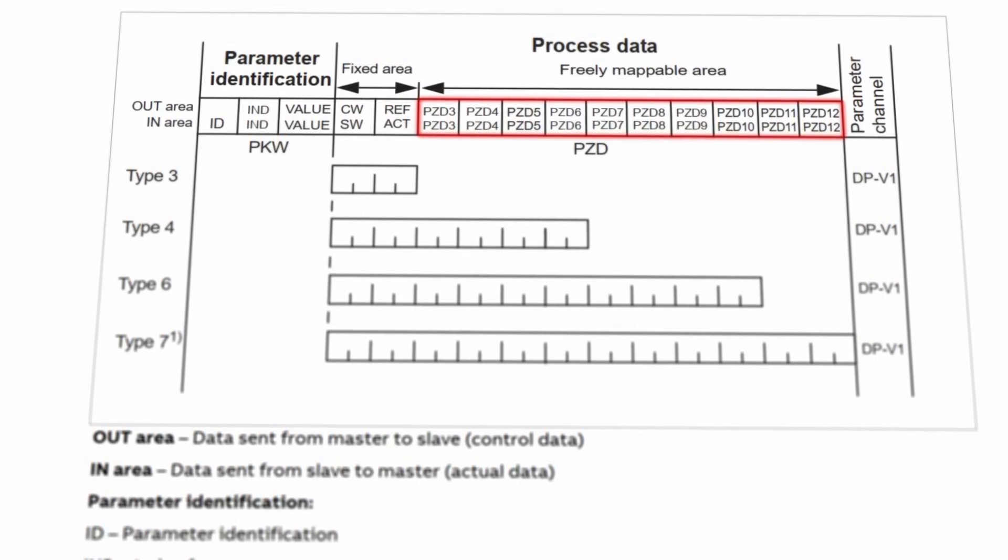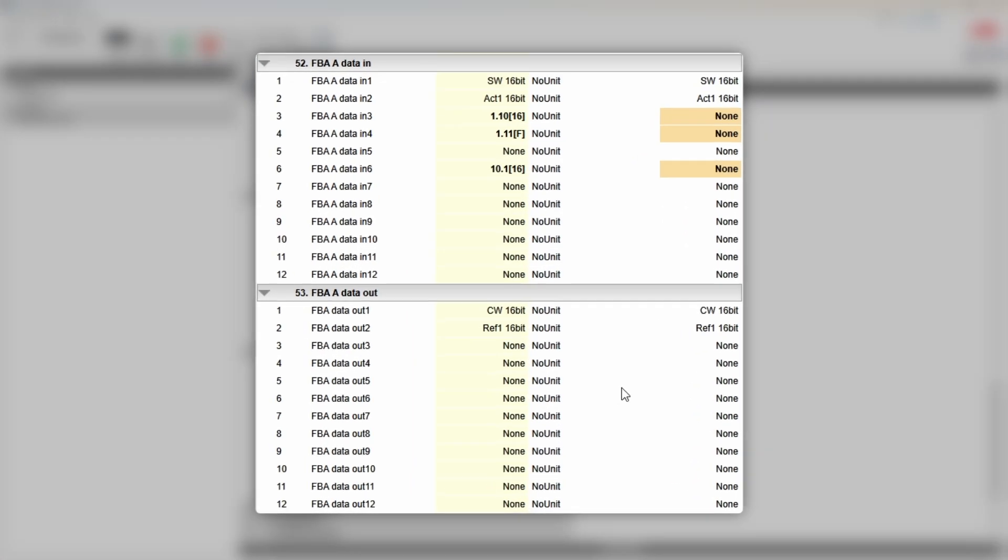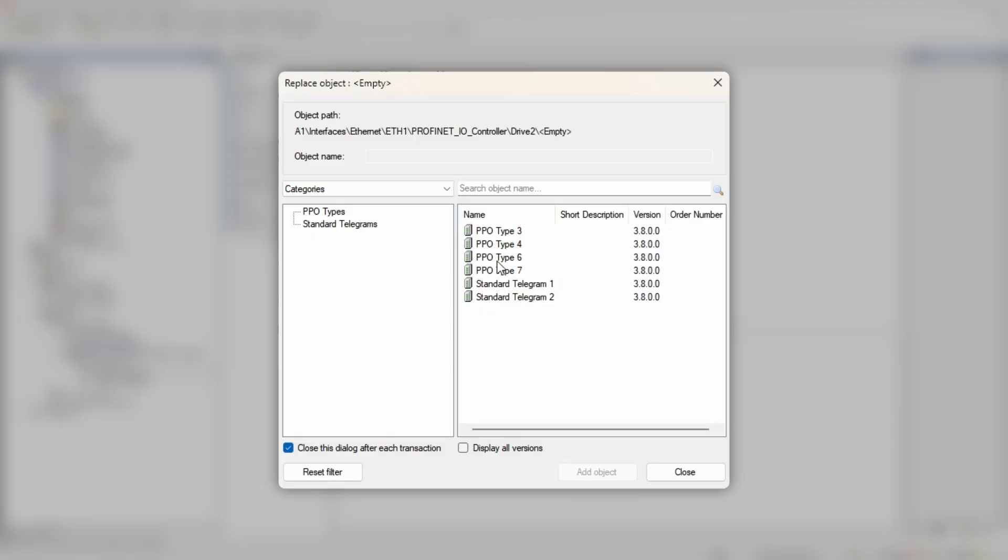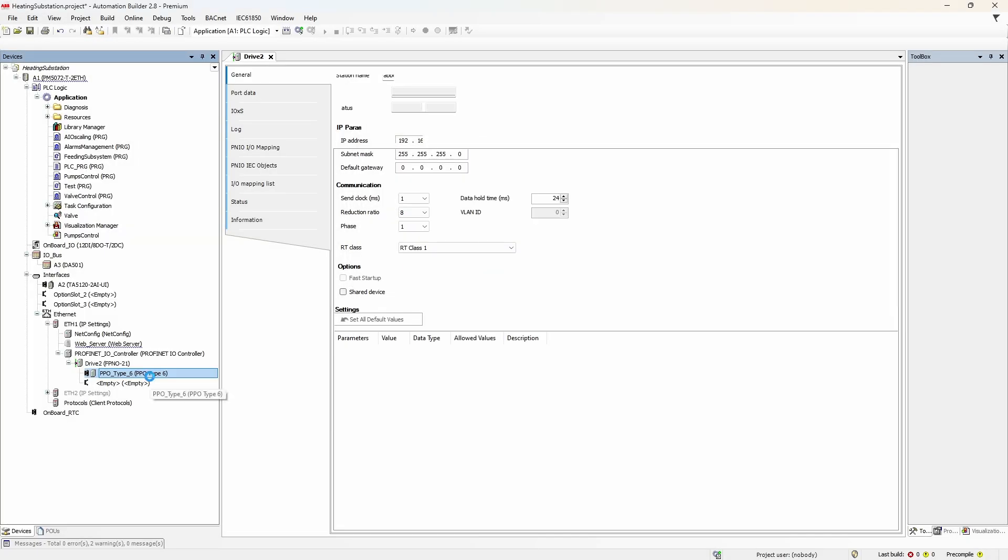Additionally, depending on the PPO type, there could be up to 10 extra PZD—short for process cyclische daten in German. Oh my god, that is so embarrassing to watch from the outside. That is how it's supposed to sound: process cyclische daten. If you feel like the PPO structure resembles something familiar, you're right. It corresponds exactly to the fieldbus data in and data out parameters from groups 52 and 53 of the drive.